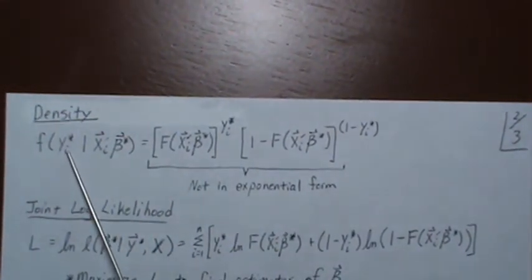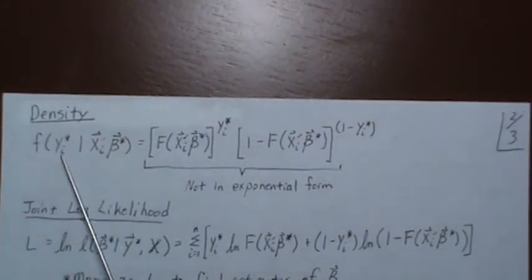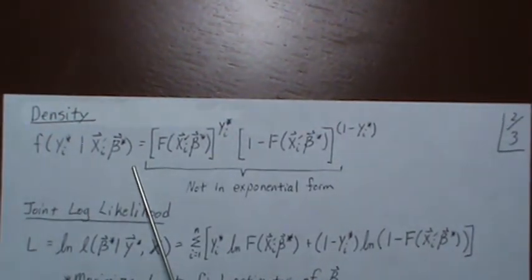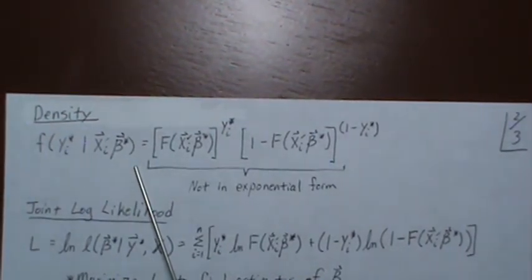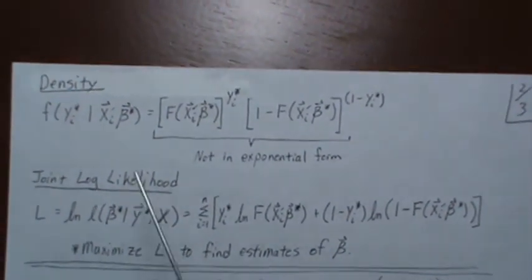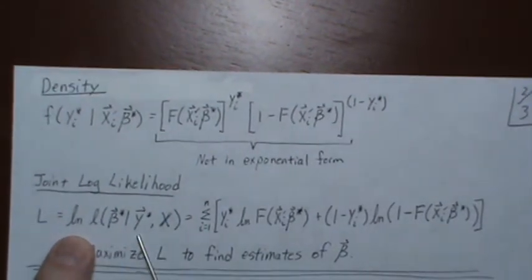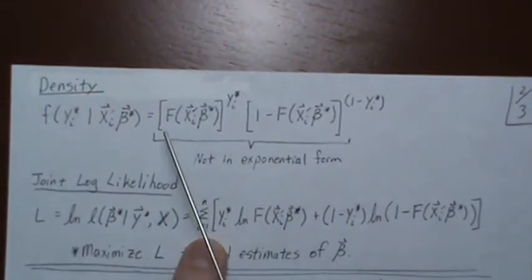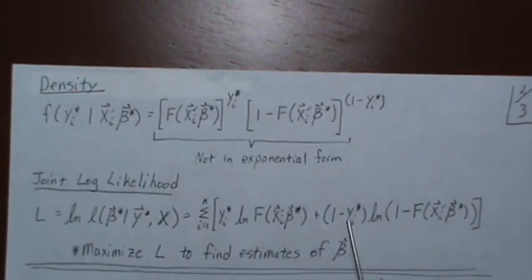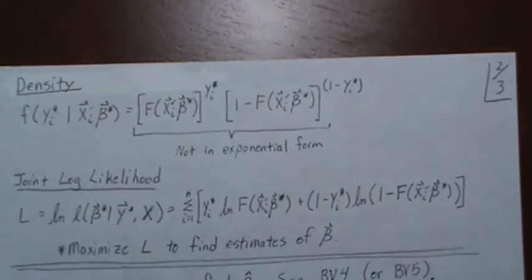But we could also, while it's a density, think about it as a likelihood if we switch how y and beta reverse each other. And then we sum over all possibilities, take the log and sum. So if we take the log, that can come out front, same way, and we sum. And now we maximize this to find the estimates of beta that maximize it.